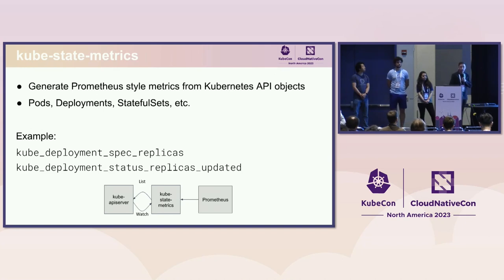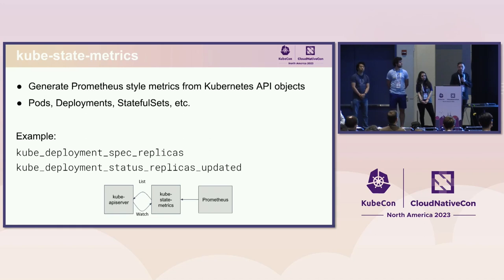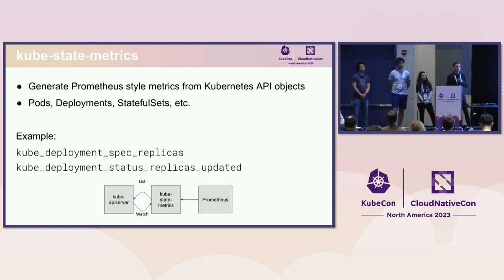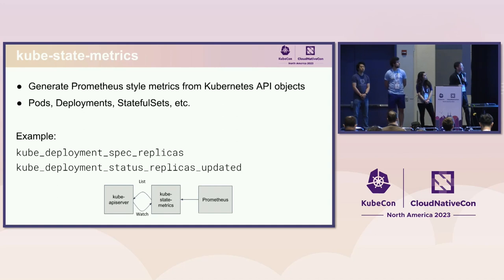Kube-state-metrics is one of the most active sub-projects we maintain today. It is used to generate Prometheus-style metrics based on any Kubernetes API — for example, metrics from pods and deployments. These two metrics can give you an idea of how a rolling update went with your deployment, which is really insightful for cluster admins.